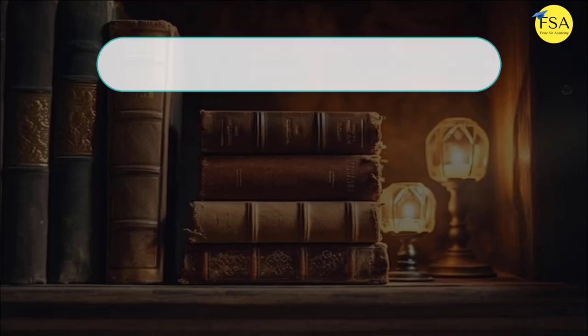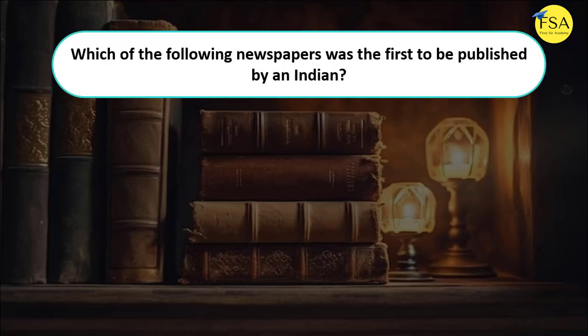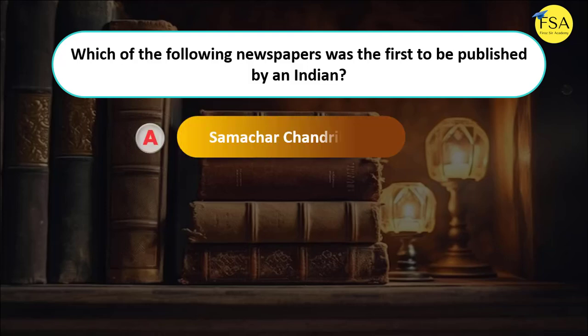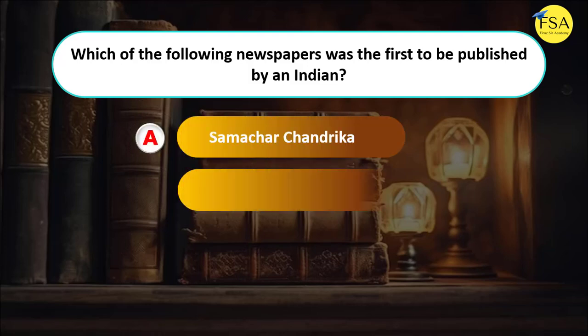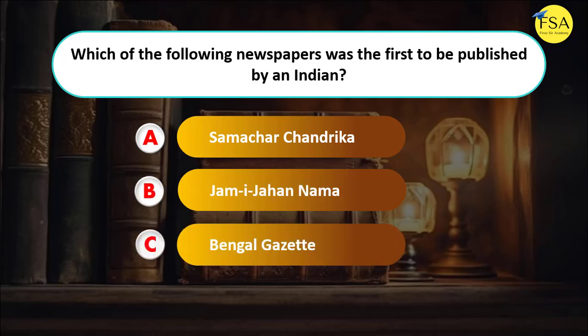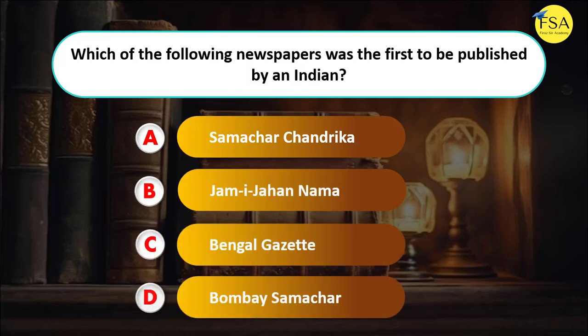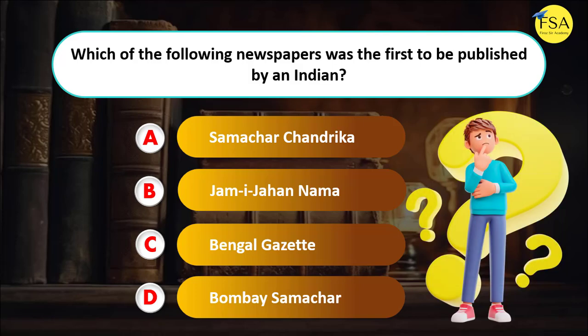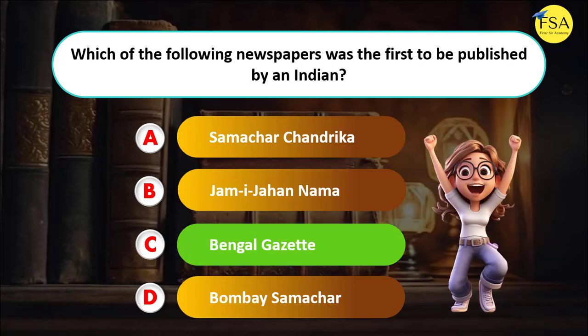Question 1: Which of the following newspapers was the first to be published by an Indian? Option A: Samarcha Chandrika. Option B: Jami Jahan Nama. Option C: Bengal Gazette. Option D: Bombay Samarcha. It's a very easy question. The answer is Option C, Bengal Gazette. Yes, of course it is correct.